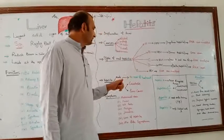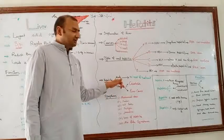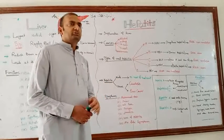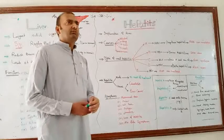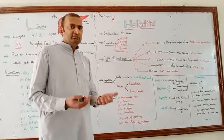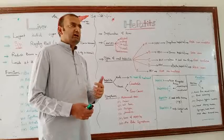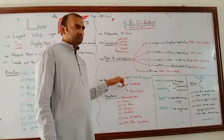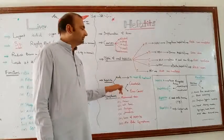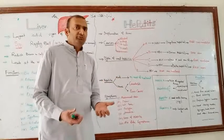Hepatitis is of two types: acute and chronic. In the case of acute hepatitis, the infection lasts no more than six months. If the infection remains beyond six months, it becomes chronic hepatitis.